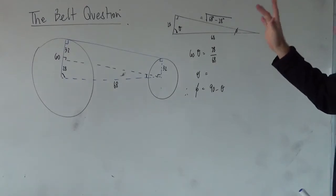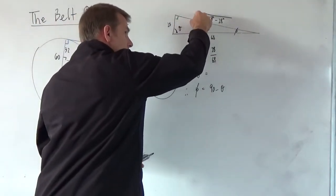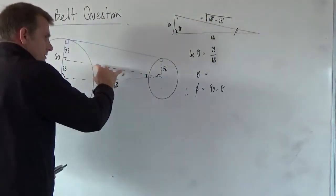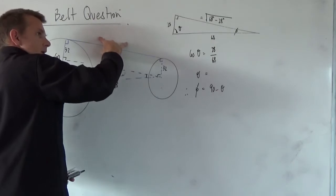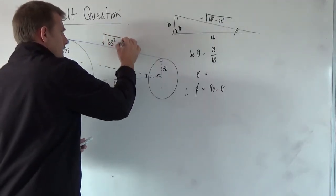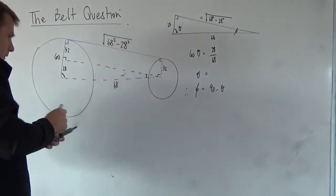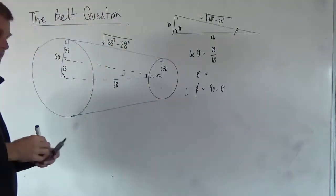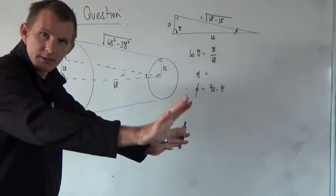I think we've got most of what we need because now we recognize this number here is also this number here. So this is the square root of 68 squared minus 28 squared. In a similar way, the line that would join those two is also going to be that. So I've got the straights, the straights are done.